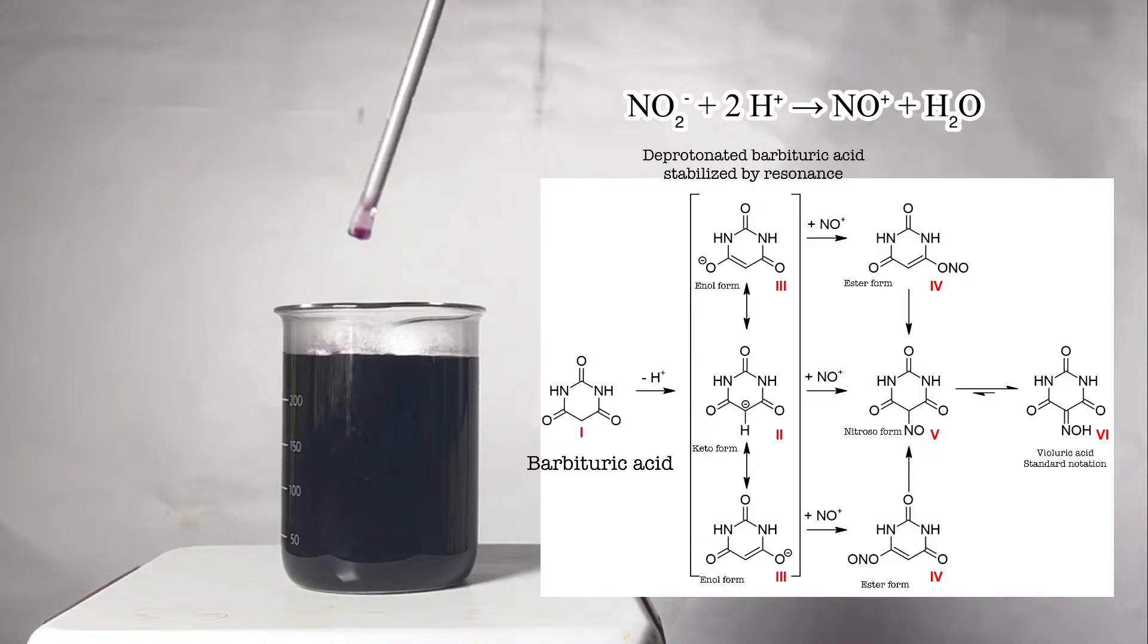The ester rearranges to the nitroso form of violuric acid. Finally, the nitroso form would tautomerize to oxime form in equilibrium. The oxime form is the usual notation of violuric acid.